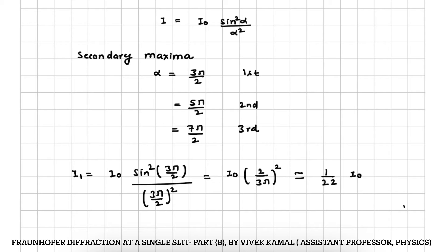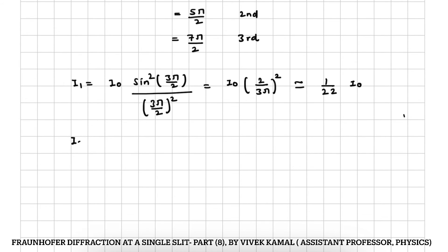Now, second secondary maxima is I0 sin square 5 pi by 2 divided by 5 pi by 2 square. Sin 5 pi by 2 is equal to 1. So this will be equal to I0 into 2 divided by 5 pi square.